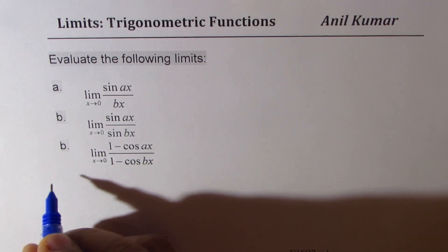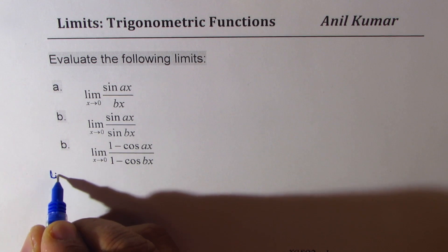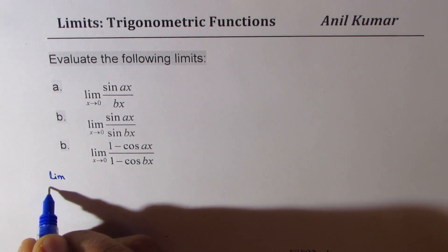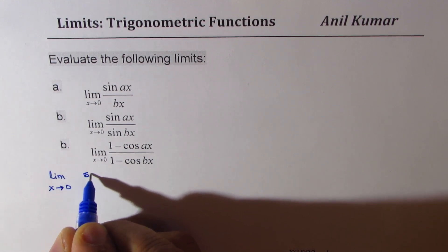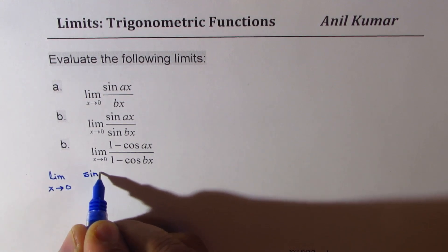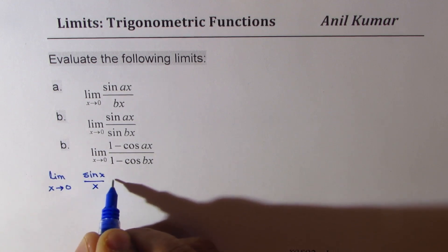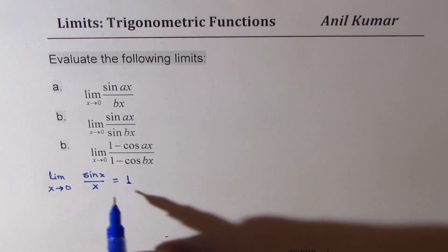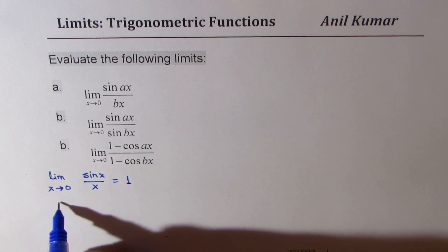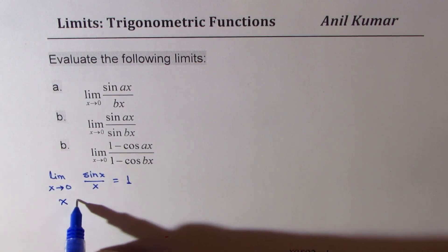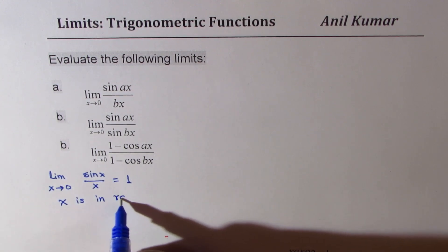We are going to use the fundamental limit, which is: limit as x approaches 0 of sine ax over x is always equal to 1. In this particular limit, x is in radians.